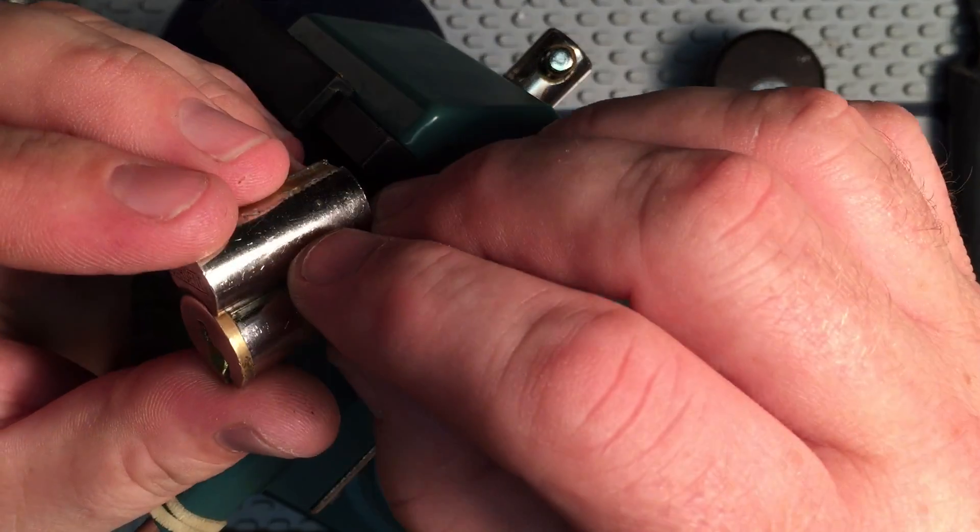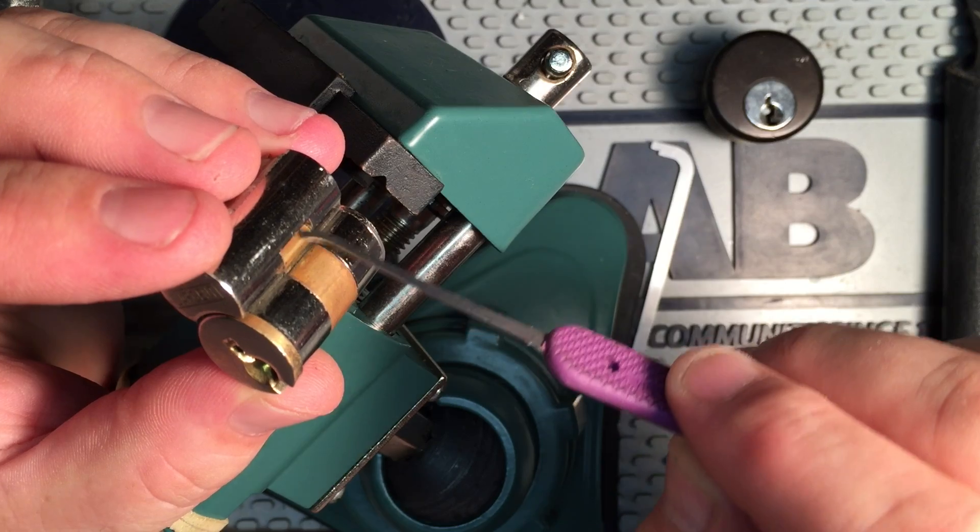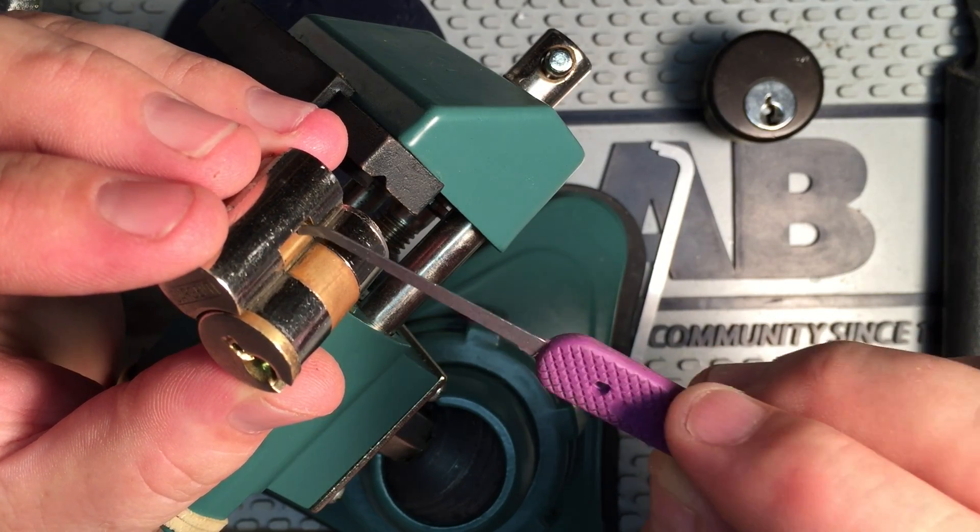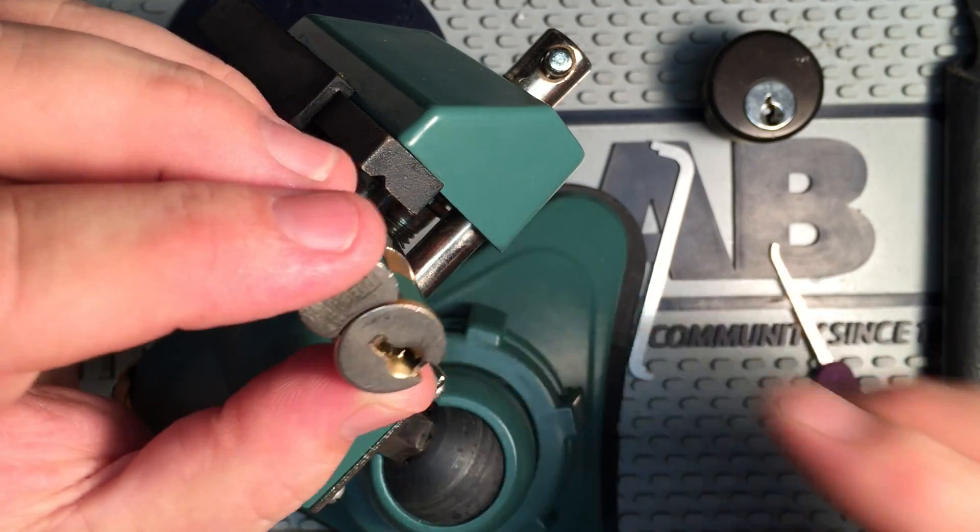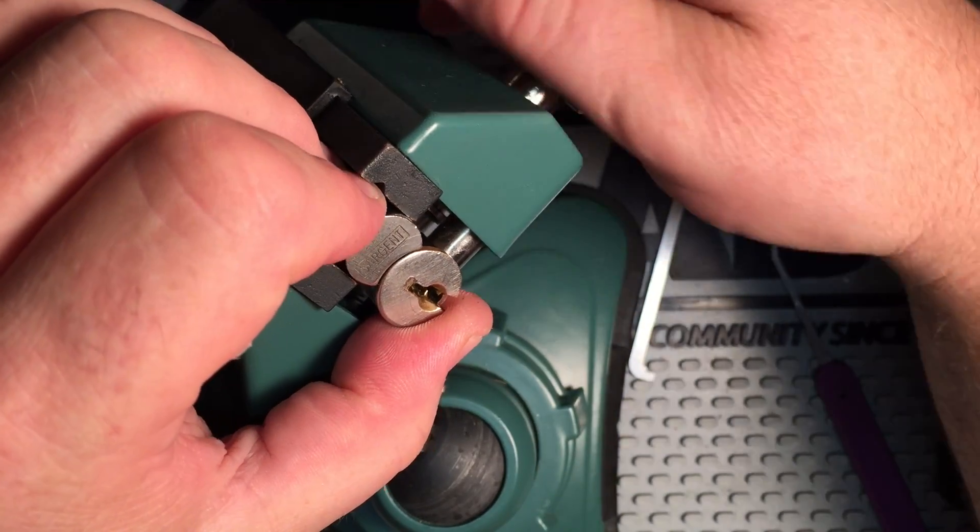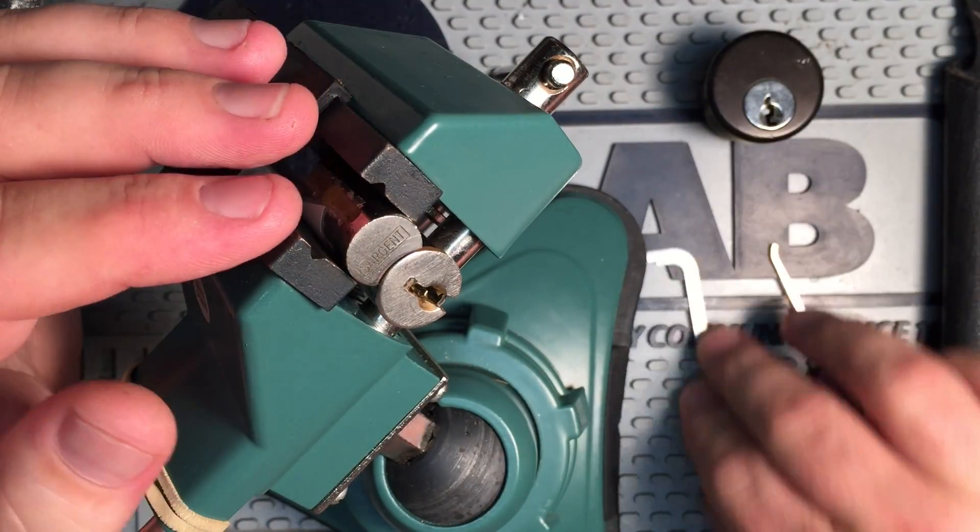And I picked the lock to its control shear line. You can see that by this control block having retracted. And so now let's see if we can pick it to its operating shear line.